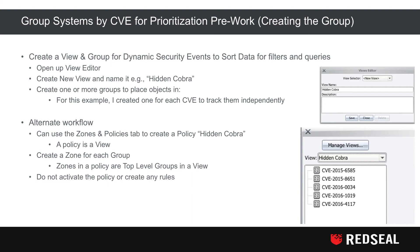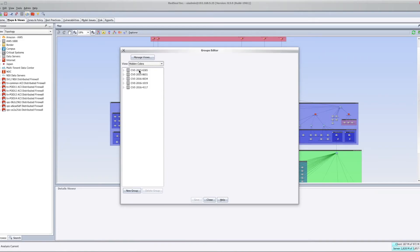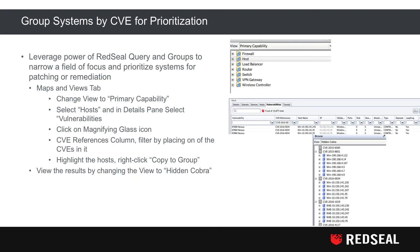Start with the View Editor, create a new view and name it 'Hidden Cobra.' Create one or more groups to place objects in — in this example, one group was created for each CVE to track them independently. An alternate workflow is to use the Zones and Policies tab to create a policy called Hidden Cobra, noting that every policy is a view. My recommendation is to not activate the policy or create any rules for it, just leverage the ease of creating a view and groups.